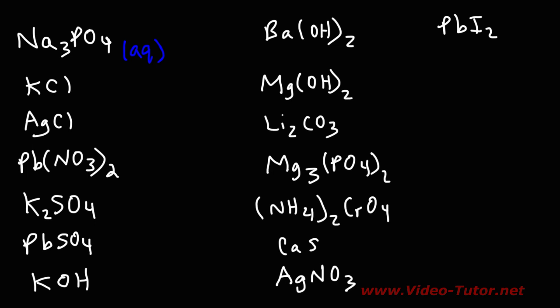What about potassium chloride? Potassium is a Group 1 metal, so it also dissolves in water — aqueous. Now silver chloride: chlorides are generally soluble, with the exceptions of silver, lead, and mercury. Because silver is an exception, this is going to be insoluble and we write solid (S), because it will remain a solid and not dissolve into the aqueous phase.